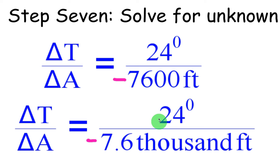So what this means is, this is just kind of a general snapshot. When we climb down 7.6 thousand feet, the temperature rose 24 degrees.